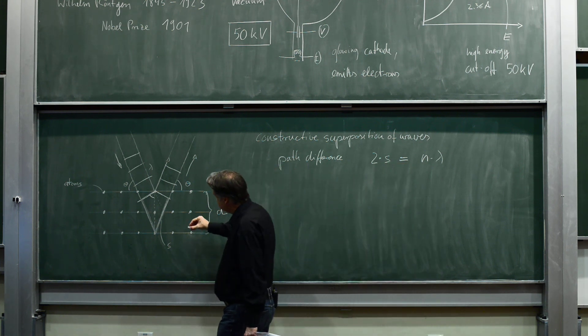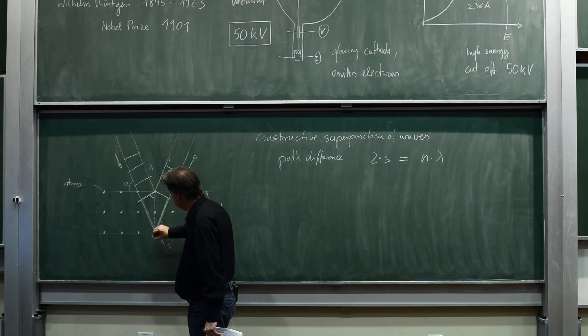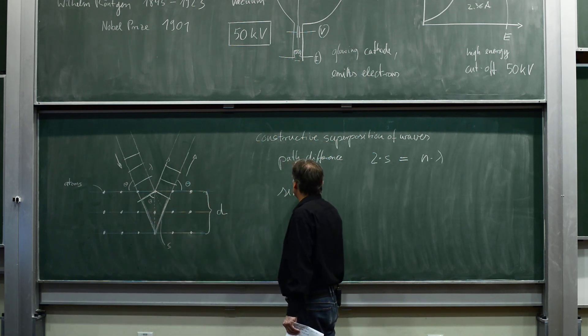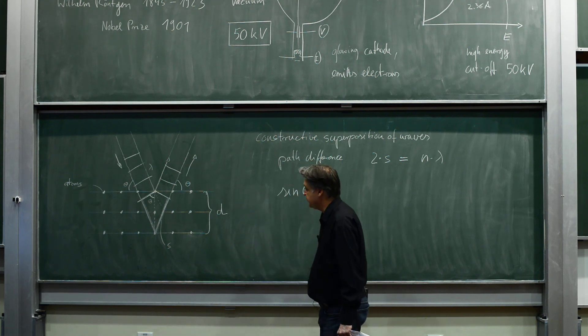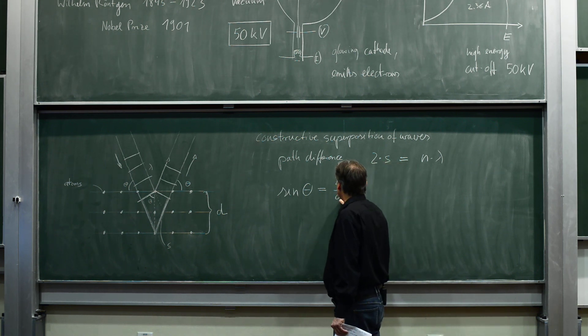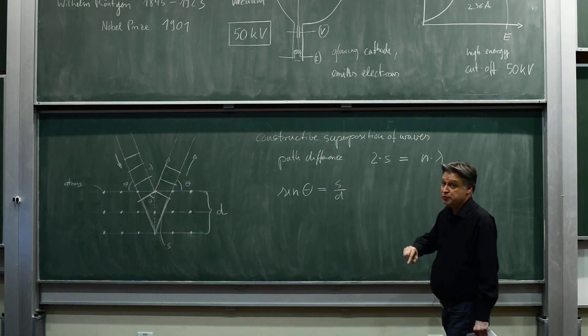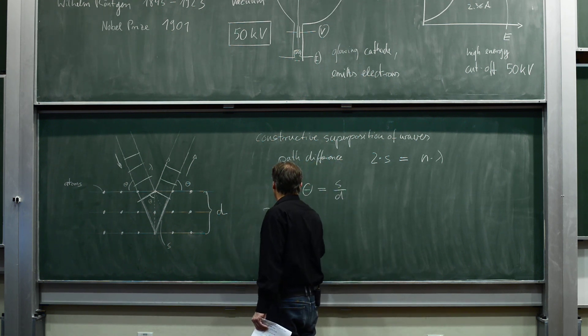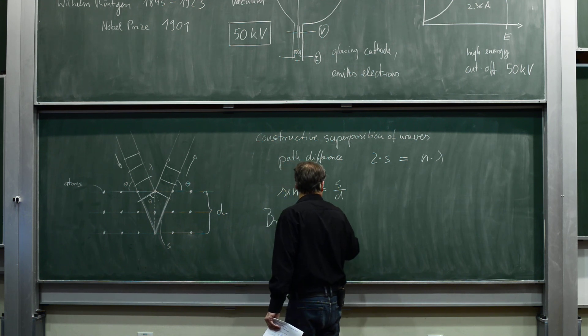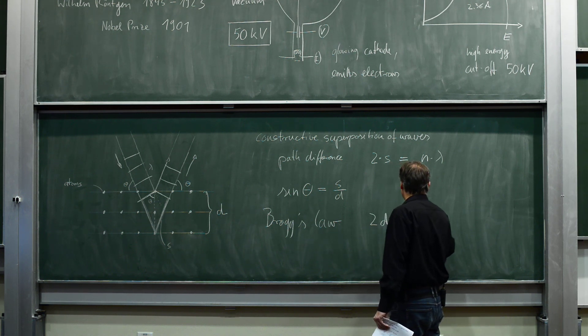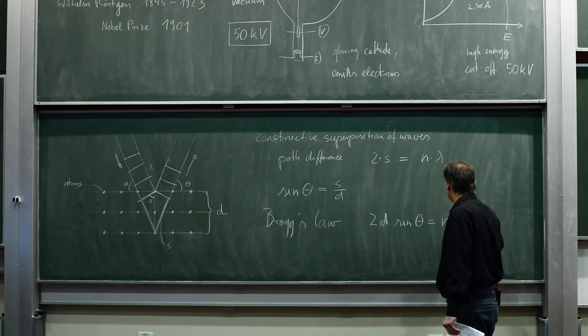So we have an incoming beam, an outgoing beam, and the scattering angle theta. The path difference is this section here and this section here, two times s. What is s? The distance from here to here is d. Sine theta equals s divided by d. Now we can merge both together and we get Bragg's law: two d sine theta equals n lambda.